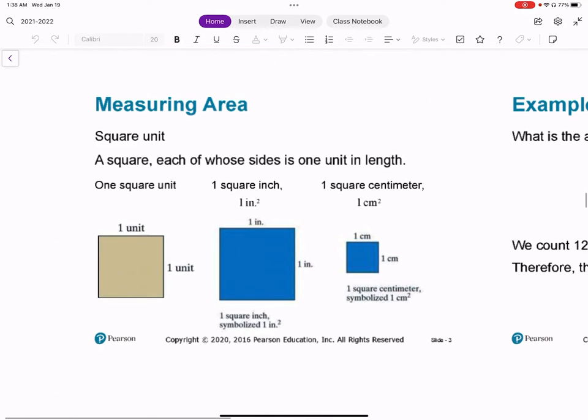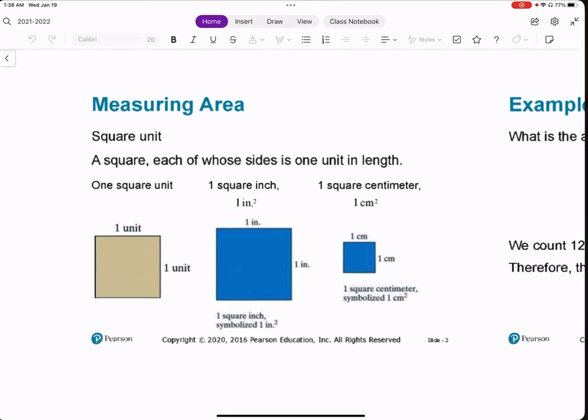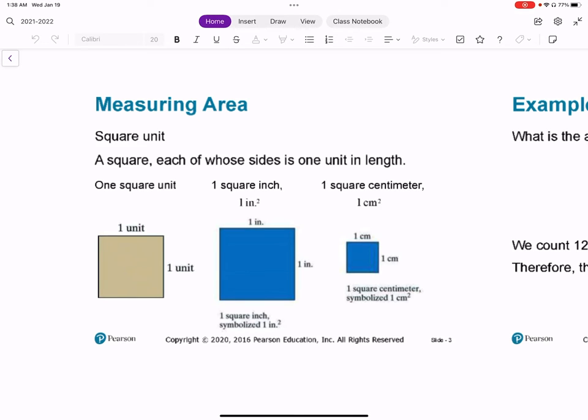So measuring area. A square unit is a square each of whose side is one unit in length. So one square unit is a 1 by 1, one square inch is 1 inch by 1 inch, and one square centimeter is 1 centimeter by 1 centimeter. Those are denoted by 1 inch squared and 1 centimeter squared.